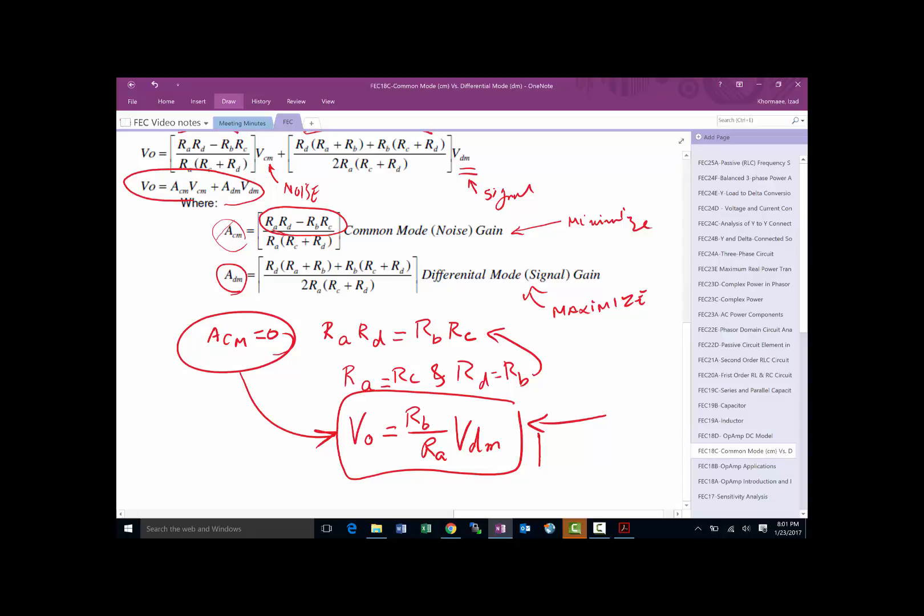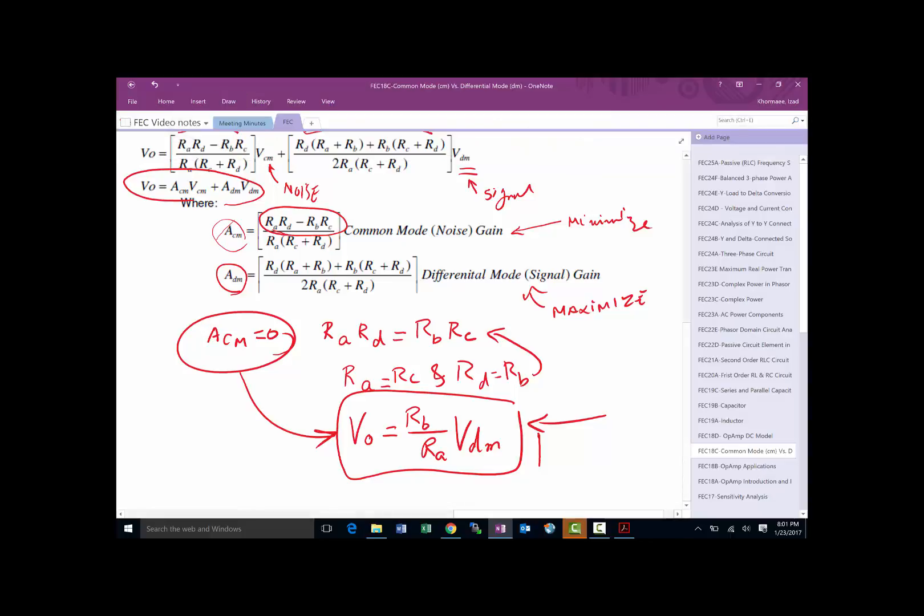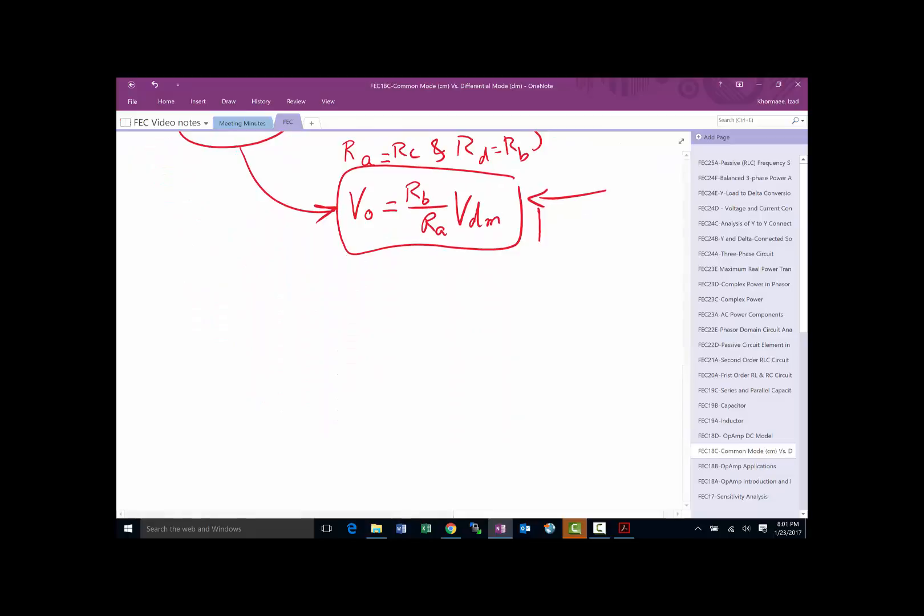That's perfect, but the reality doesn't always let us select those resistor values to do that. So in the industry, they have a measure of how good your amplifier is - goodness meaning how much noise do you reject and how much signal do you pass through.